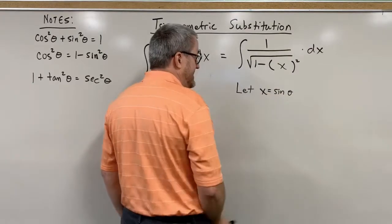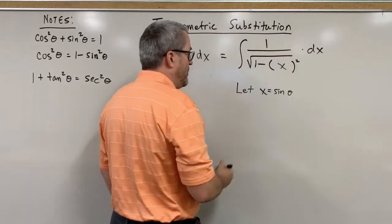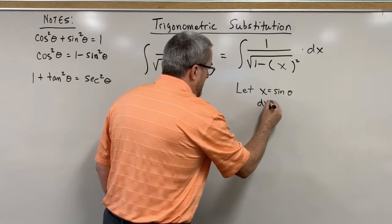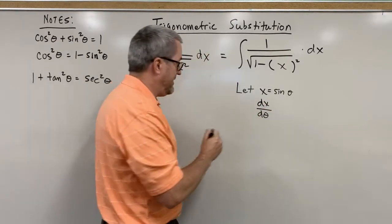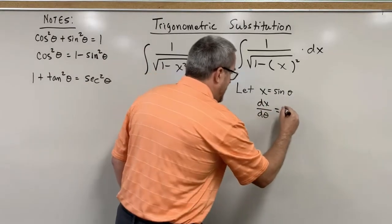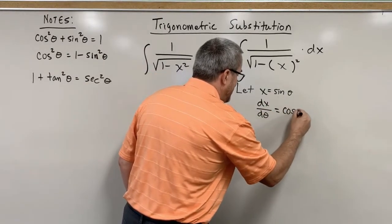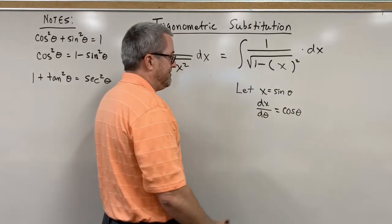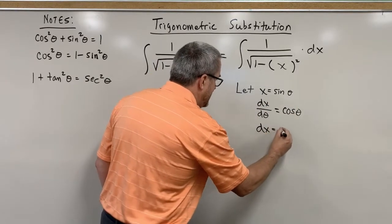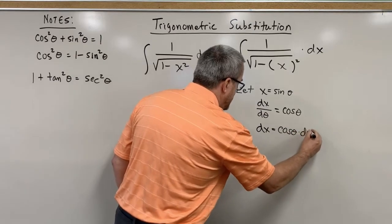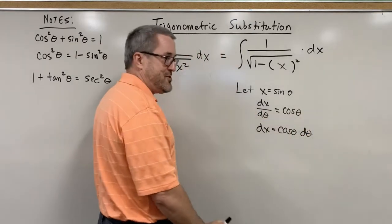As we substitute something in place of x, we're also going to have to substitute something appropriate in the place of dx to keep this integral equivalent as we adapt its structure. So let's find out. If x is the sine of theta, then what would dx be? The derivative of x with respect to theta, otherwise known as dx/dθ. The derivative of sine of theta is cosine of theta.